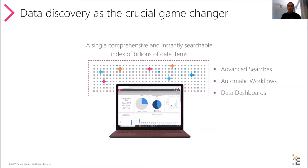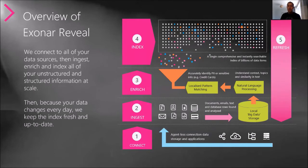Data discovery is the crucial software enabling organizations to overcome a range of challenges including over-retained data. By creating a single comprehensive and instantly searchable index of your data, you can easily search for items that meet given criteria, set up automatic workflows, and view all your data from simple dashboards. What makes Exxonar different from any other data discovery tech on the market is our ability to see both unstructured and structured data at huge scale across the organization — including the detail and content within each item as well as the metadata.